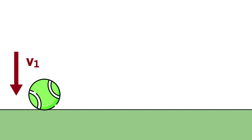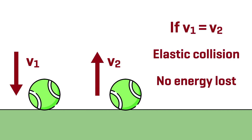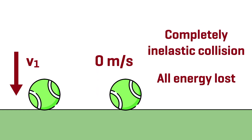The particular energy we talk about with regards to a moving tennis ball is called kinetic energy, and it's related to the velocity of the ball. Here's a ball heading towards the ground with velocity V1 — it bounces with velocity V2. If V1 is equal to V2, it's an elastic collision, meaning no energy is lost. However, if V2 is equal to zero meters per second, then it's a completely inelastic collision and all energy is lost.